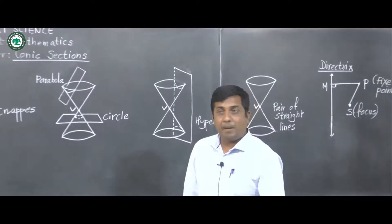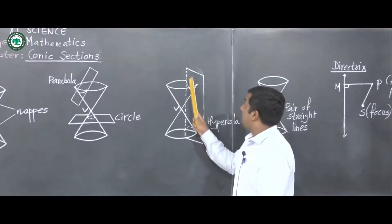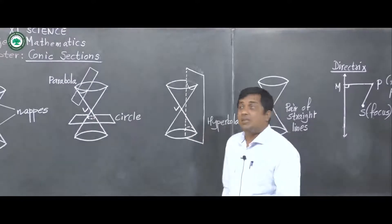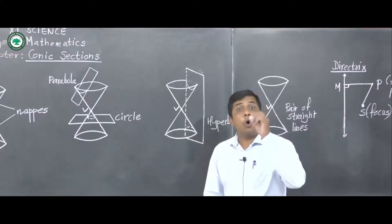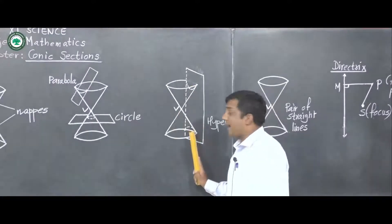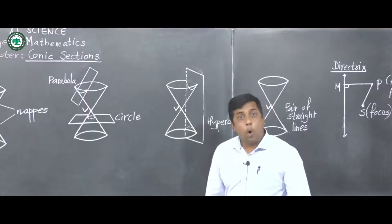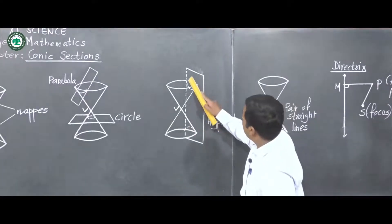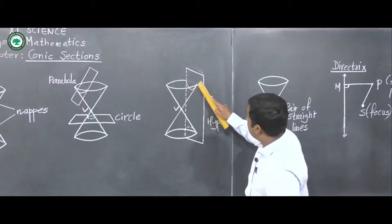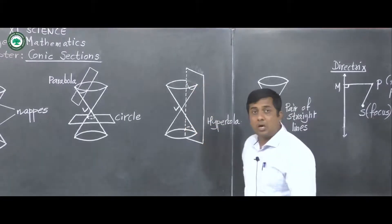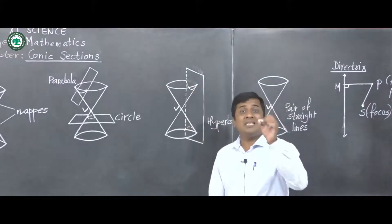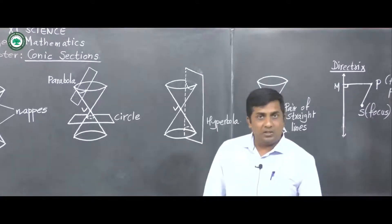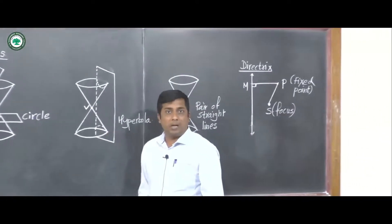Next, if we consider a plane which is parallel to the axis and divides both the upper nappe and the lower nappe, the resulting section gives us a hyperbola.